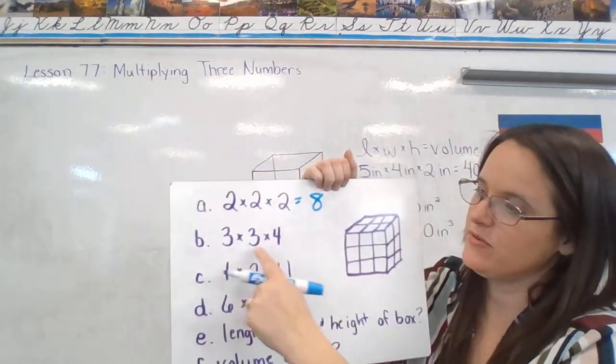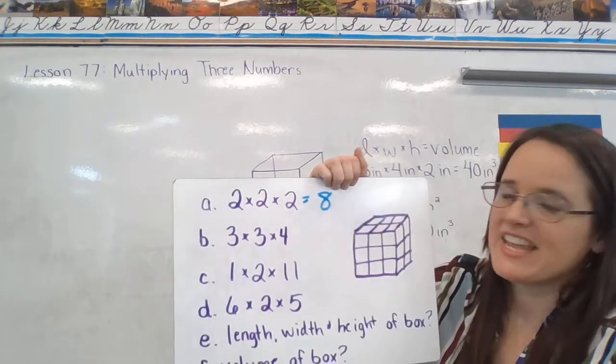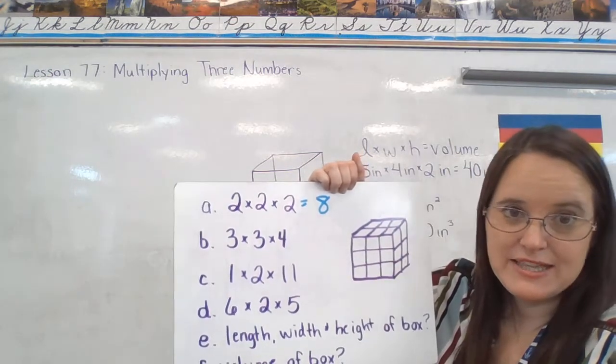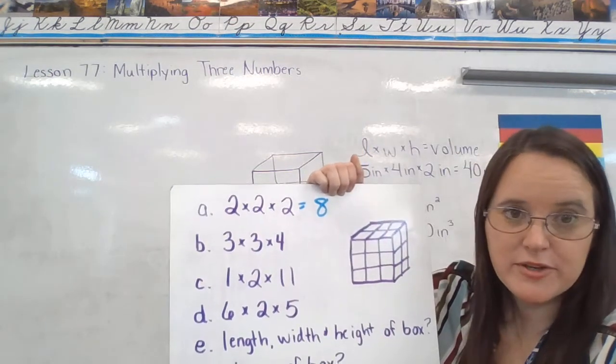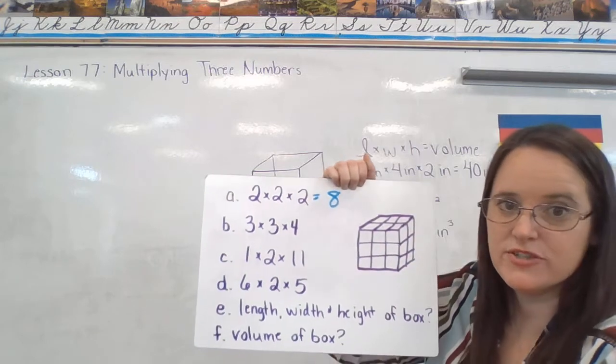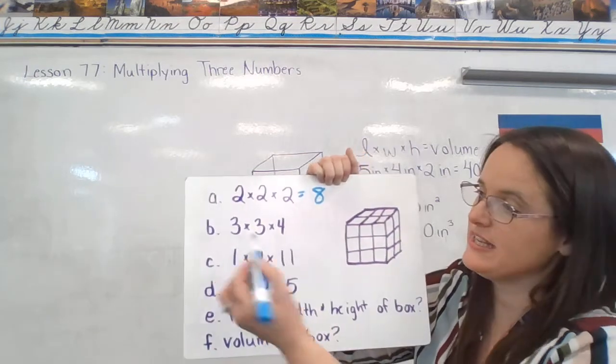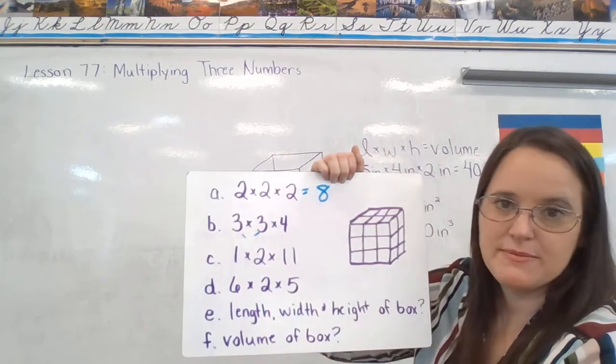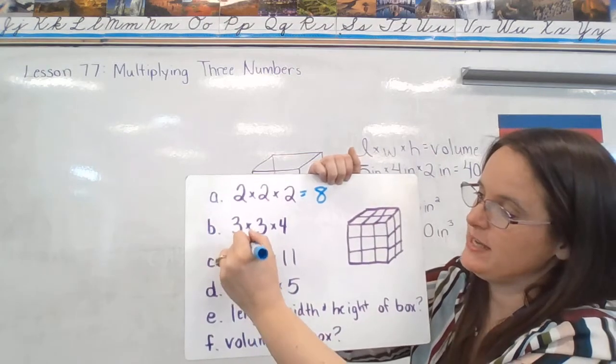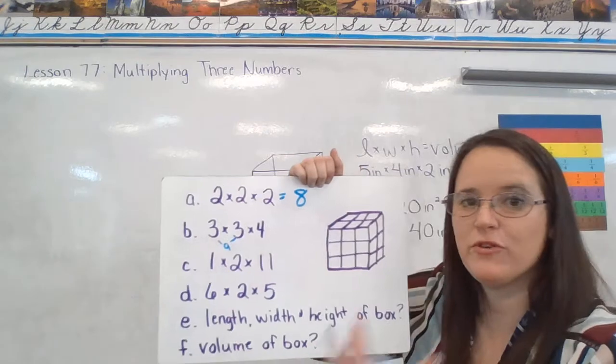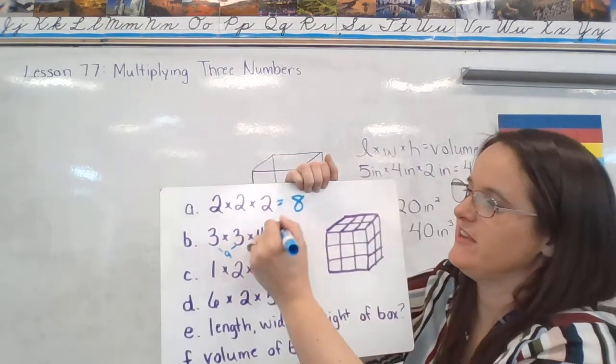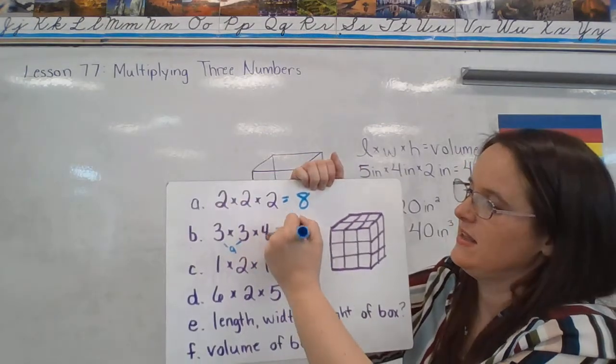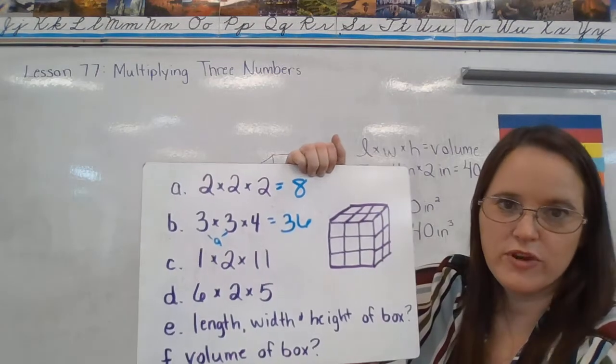Here we have 3 times 3 times 4. If you did it differently than me, no problem. You're going to come up with the same answer as long as you did your multiplication accurately. I'm going to say 3 times 3 first. 3 times 3 is 9. And then 9 times 4 I can do really easily using my fingers. So 9 times 4 is 36.